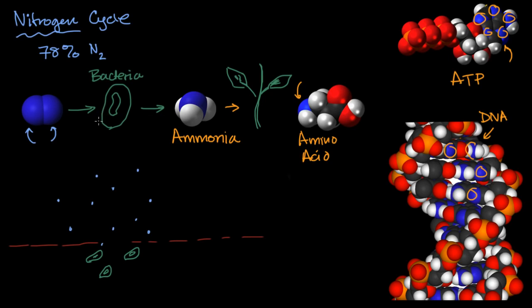But the step of fixing that nitrogen, that's done by bacteria, which can then produce the ammonia, which is then usable by plants. And then by eating the plants, things like you and me can get that nitrogen into our systems.